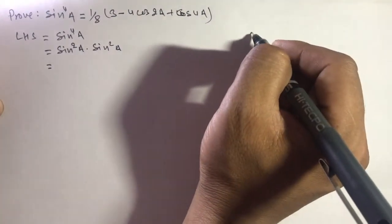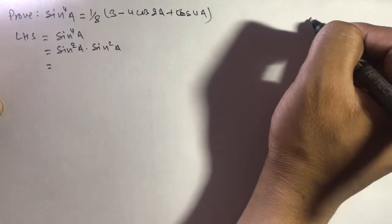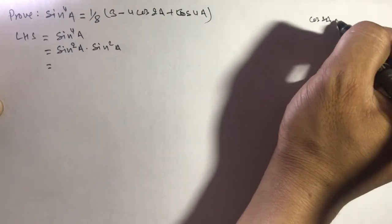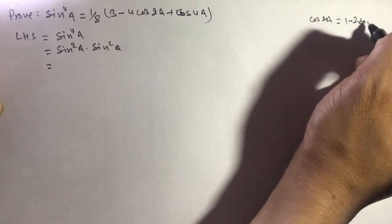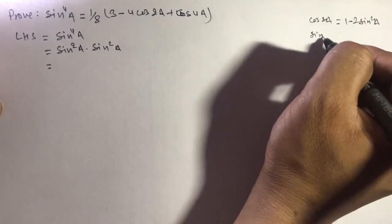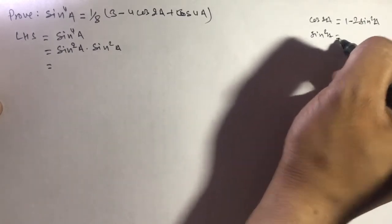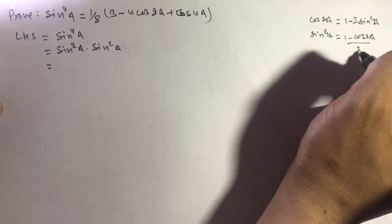Look here. We know the formula cos 2a equals 1 - 2sin²a. Then sin²a equals (1 - cos 2a)/2.